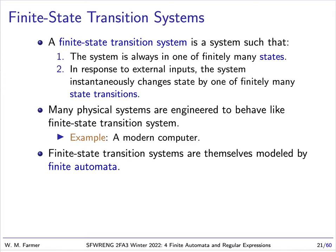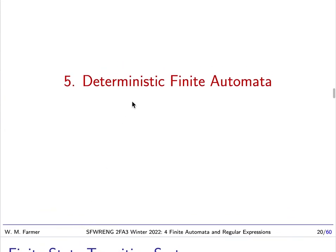A finite state transition system is a very useful idea. It's a system in which there are only finitely many states that the system can be in, and there are only finitely many ways that the system can transition from one state to another.